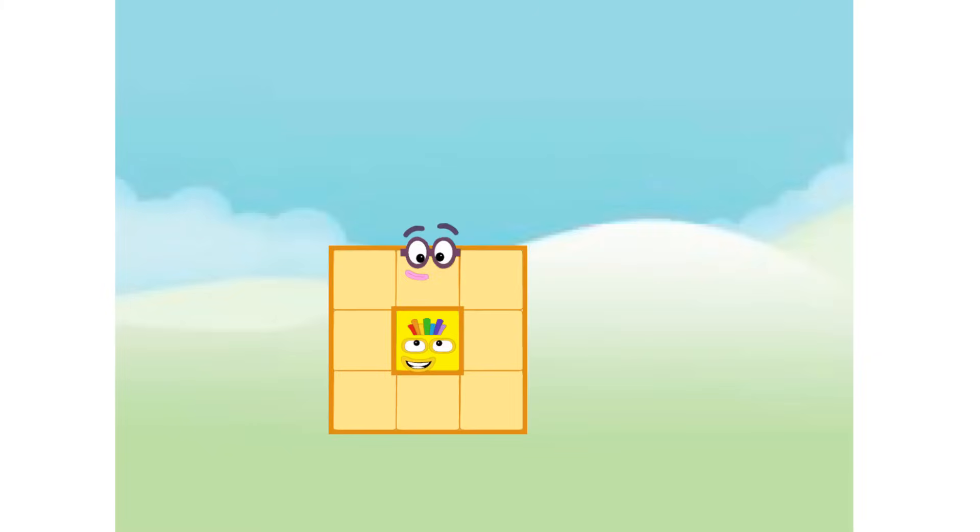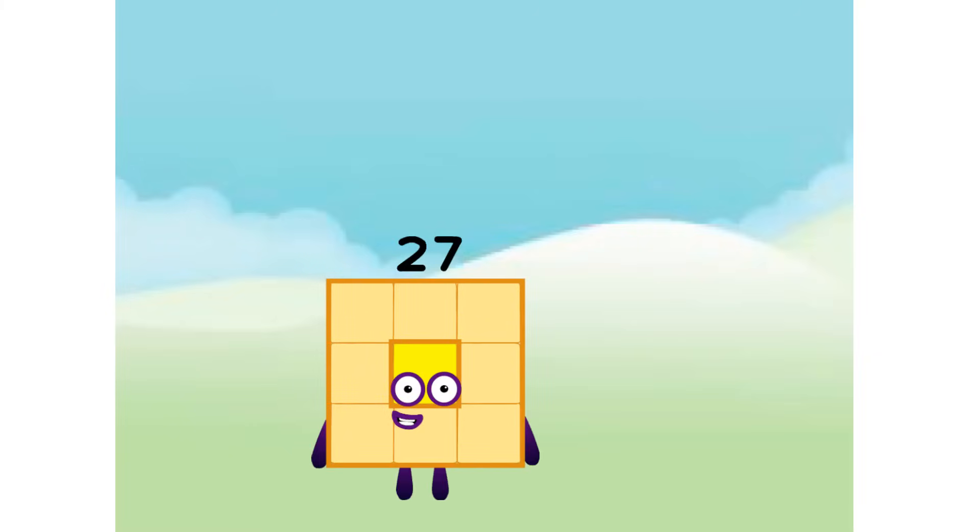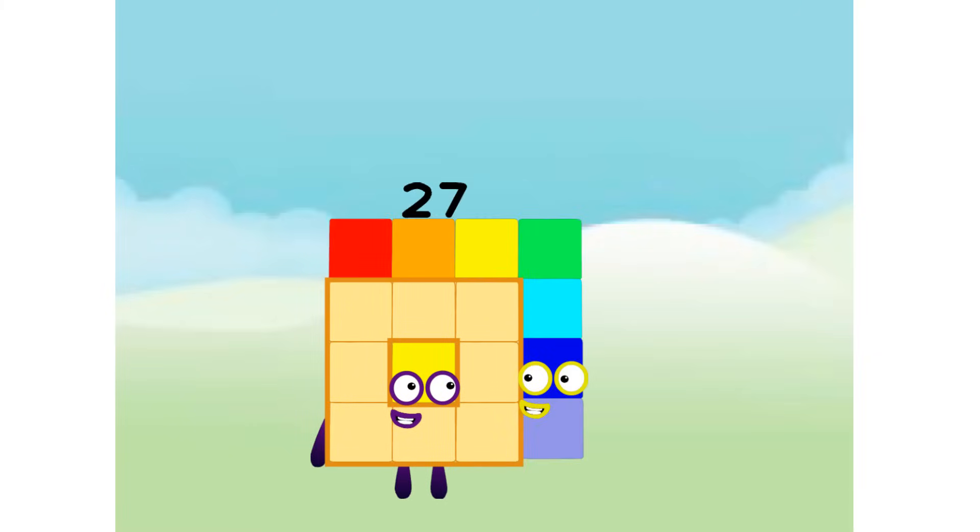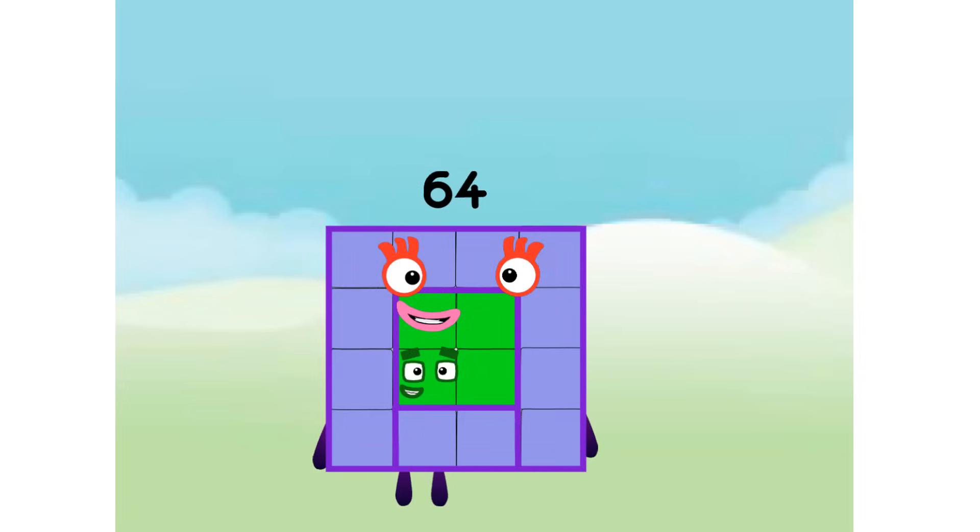8. 27. Pull yourself together. I can make a circle. 64. Sorry. I figured myself out. I'm 64. I am square.